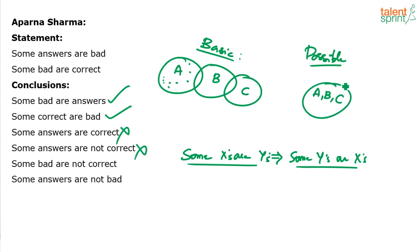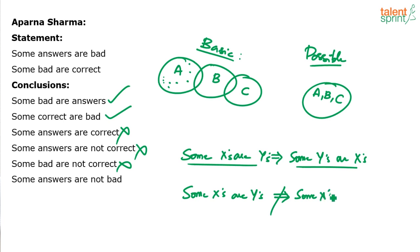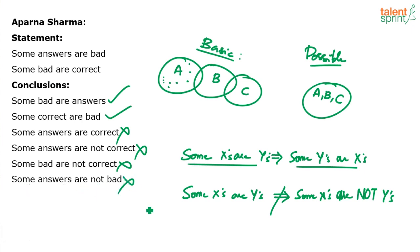So the fourth conclusion becomes false. Now, some bad are not correct — again, some bad are not correct fails in the same possible diagram. Remember, some bad are correct does not mean that some bad are not correct. Be very careful: some X's are Y's does not mean that some X's are not Y's. Some A's are B's does not mean that some A's are not B's. If some beds are couches, that does not mean some beds are not couches. Then some answers are not bad — the one single possible diagram proves all the last four conclusions to be wrong.